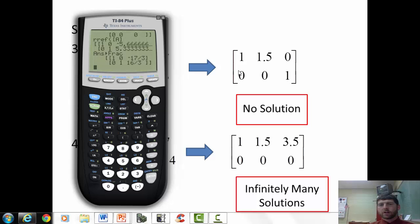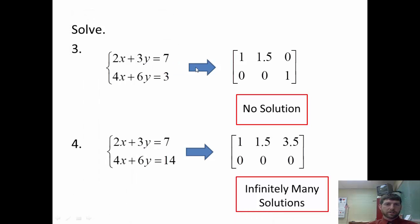So this is one that's a 2 by 3 that would have an answer. So what you're looking for is if your left hand gives you the 1s for the left-handed diagonal and 0s for all other spots, the last column is your answer. If you don't get that, look at your bottom row. If it's all 0s equals a number, that's no solution. All 0s equals a 0, that's infinitely many solutions. And that's the three possible answers you can get from doing RREF on a system of equations. So those are the steps. That's the process, how to solve a system of equations using the RREF function on the calculator.